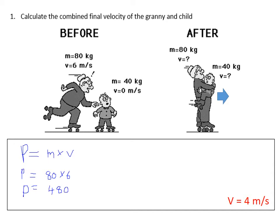Okay, that's granny's momentum beforehand, p equals 480 kilogram meters per second. The little boy's momentum, well it's just 40 times nothing, so in total he's got zero momentum. He's not moving so his momentum is zero. So the total is 480 kilogram meters per second. That's before the collision.